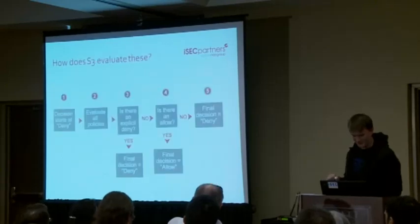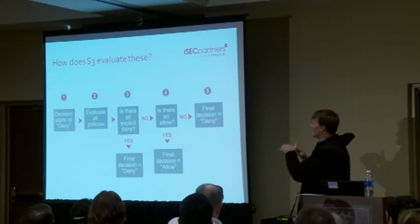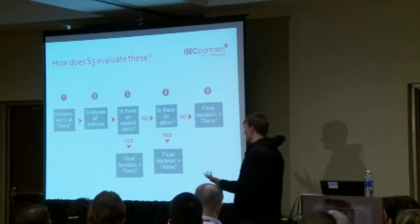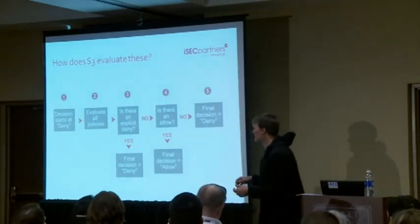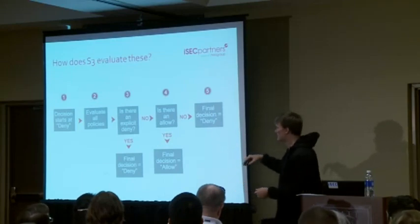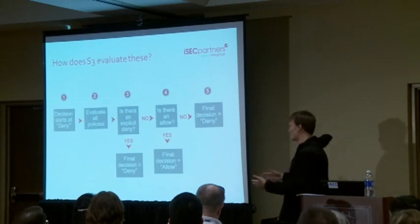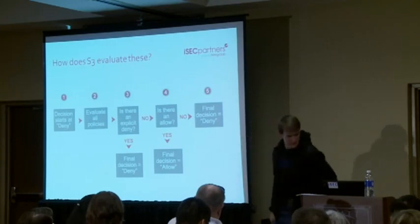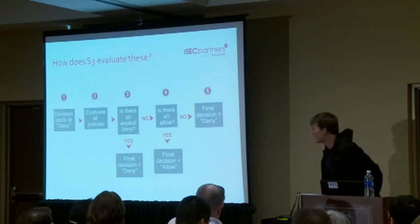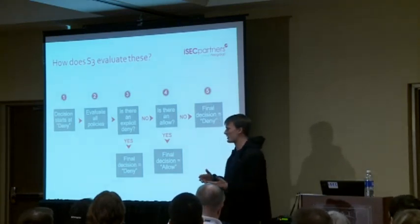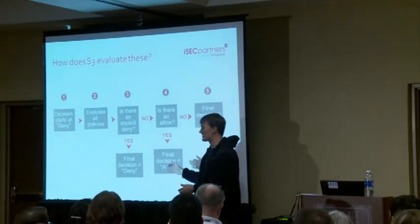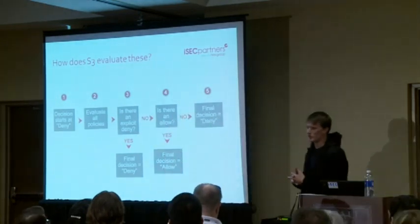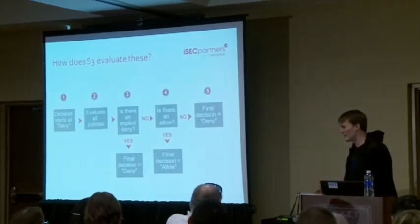Let's look at how S3 evaluates all these different access controls. It uses something called default deny logic. By default everything is denied. When a request comes in it evaluates all the policies: first, is there an explicit deny? If so, it denies the request. Otherwise, it checks for an explicit allow - if there is one, it allows the request; otherwise it denies. Even if you have an ACL that permits access but a bucket policy that denies access, the deny always trumps the permit. You could have multiple contradicting policies, but the end result will always be deny when there's a conflict. The beauty of this is that by default it's going to be secure unless you accidentally misconfigure things.